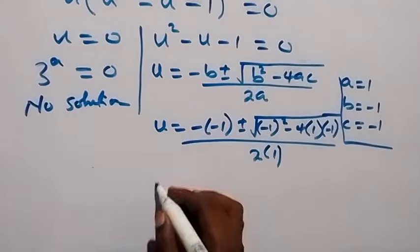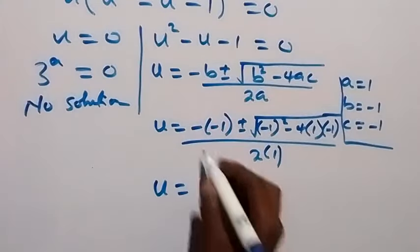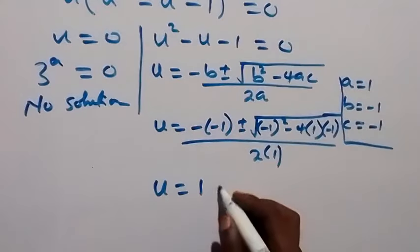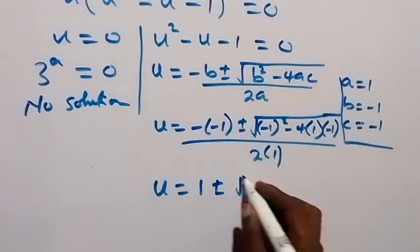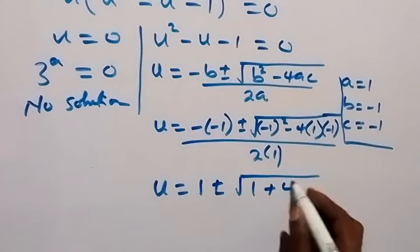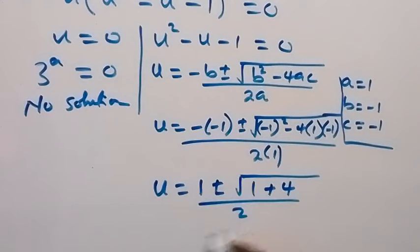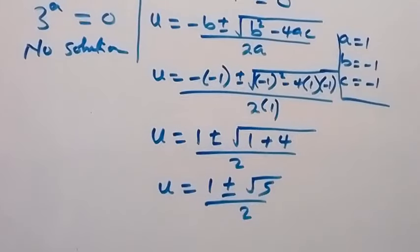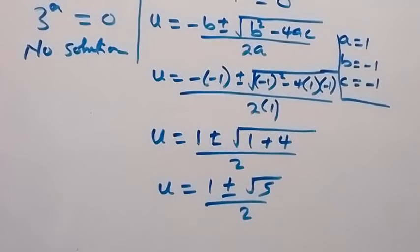Substituting, we have u equals 1 plus or minus the square root of 1 plus 4, all over 2. This simplifies to u equals 1 plus or minus the square root of 5, over 2. So we have two possible values of u.